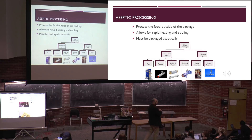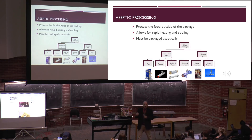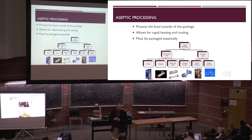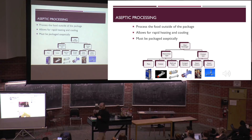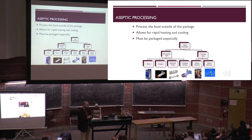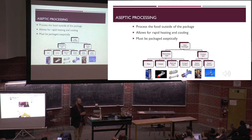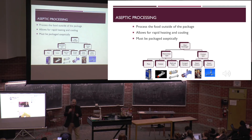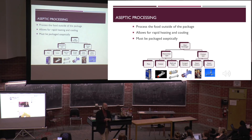And depending on those parameters, that determines how long and to what temperature we have to process that food for. This works when we don't worry too much about the quality of the nutrients in that product, because heat degrades nutrients - all nutrients. Different nutrients are more susceptible to damage by heat than others.